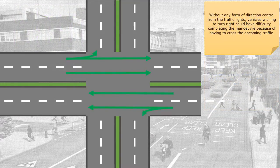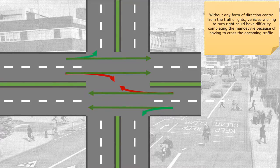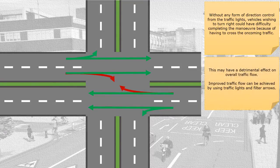Without any form of direction control from the traffic lights, vehicles wishing to turn right would have difficulty completing the maneuver because of having to cross the oncoming traffic. This may have a detrimental effect on overall traffic flow.